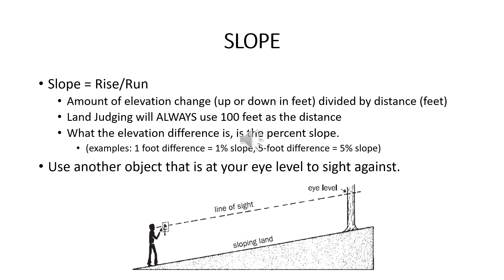A one-foot rise will be equal to one percent slope. A five-foot rise will be equal to a five percent slope. When estimating the slope, you must look at something or imagine something at the same eye level height to get the correct slope. The picture on the screen shows a person measuring a slope using a spot on the tree that is the same height as their eyes. If there is no object, then you must imagine a spot the same level as your eyes are looking to get the correct slope.